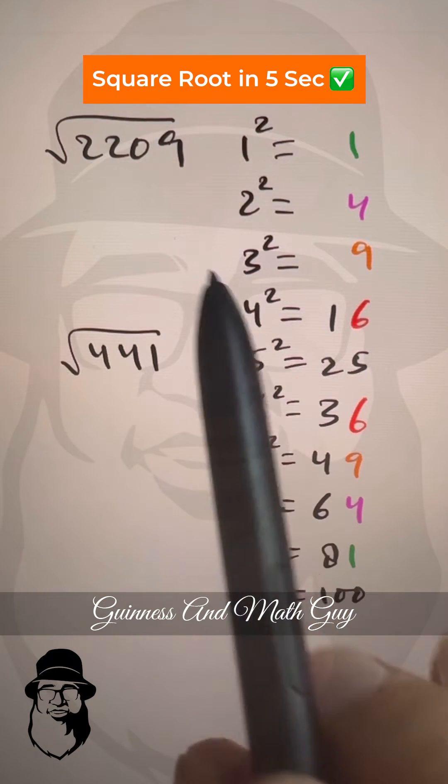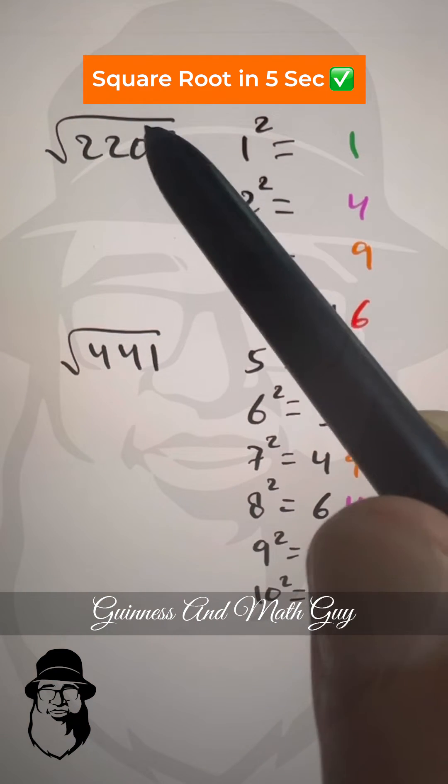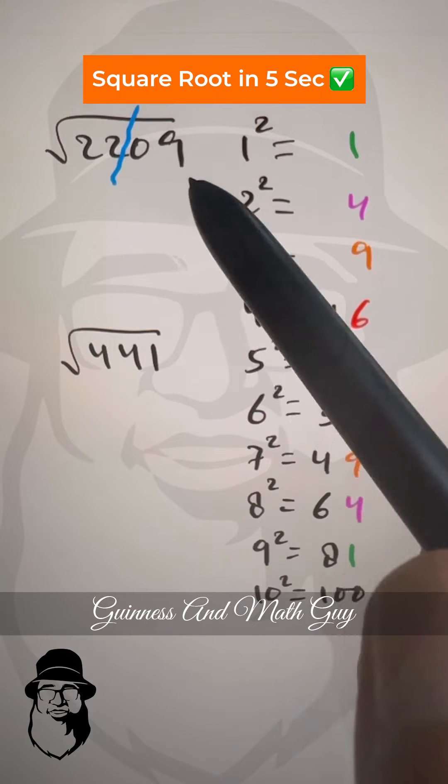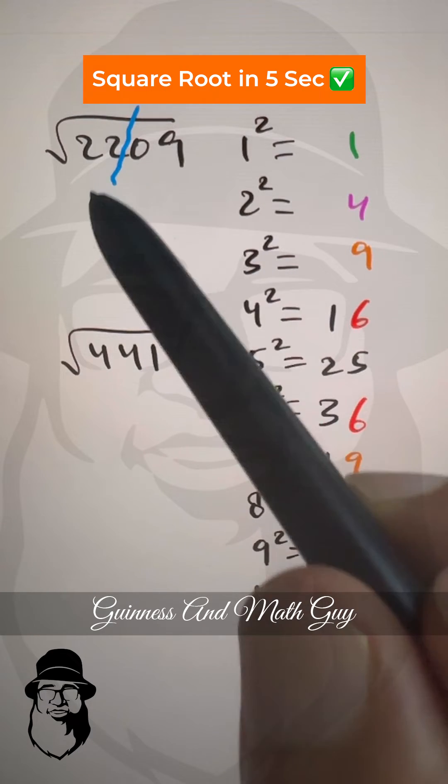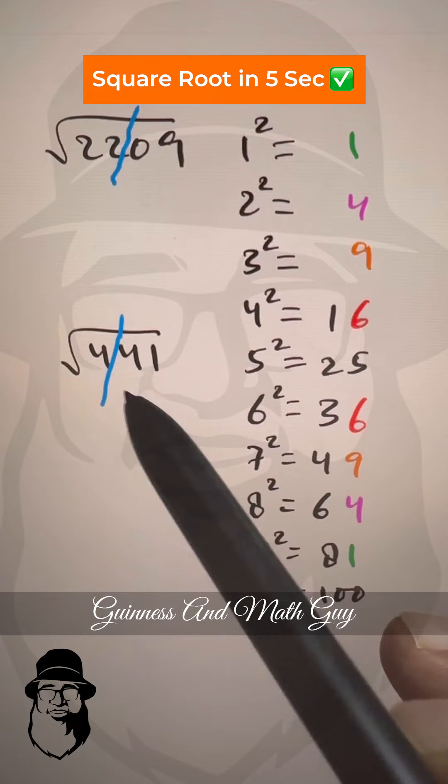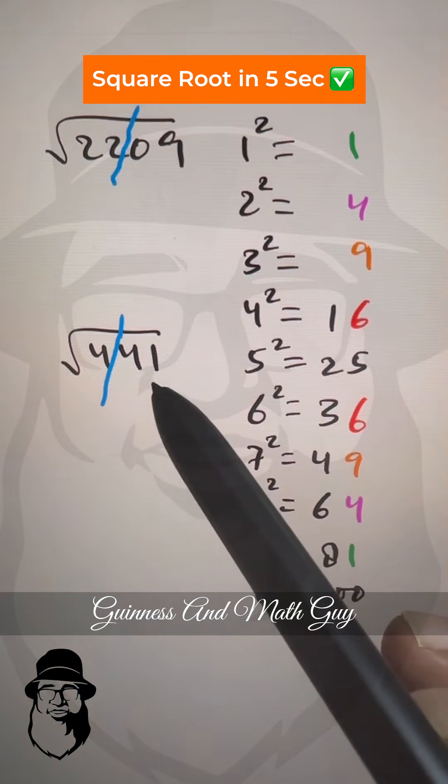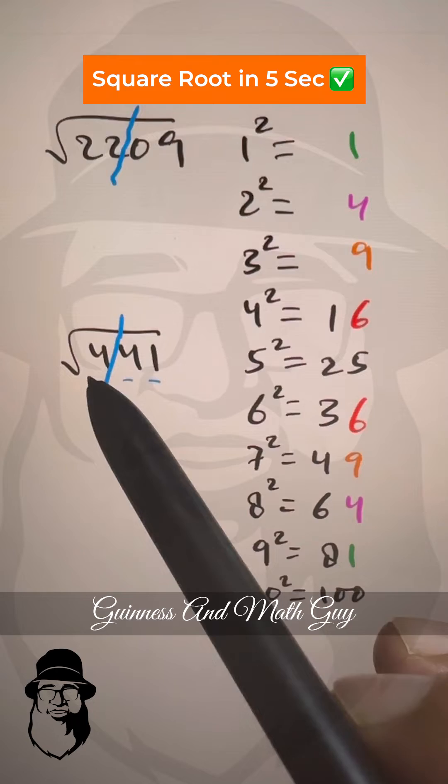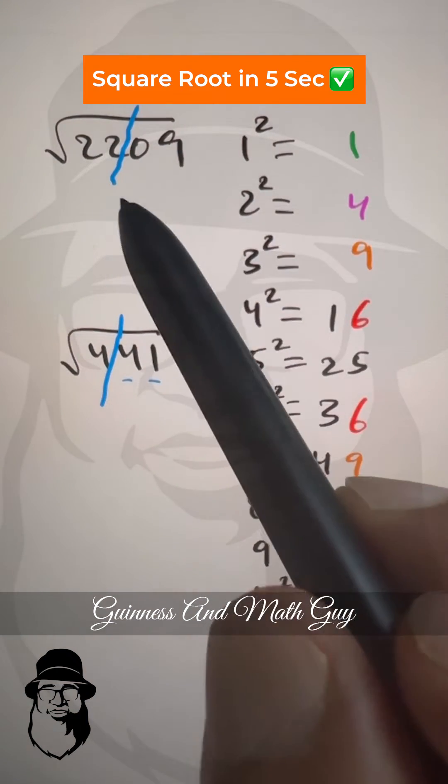To find the square roots of perfect squares, we split them in pairs from right. For example, 09 is separate, then we have 22. And here also, we split it from right, take two digits: 41, then 4. That's the first step.